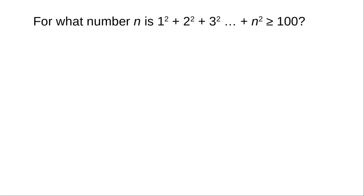You use a for loop when you have a specific number of iterations that you want to do. Sometimes though you don't know in advance how many iterations you'll need. For example, if you want to find the value of n for which the sum of squares up to and including n is greater than or equal to 100. To do a task like this, you need a while loop.